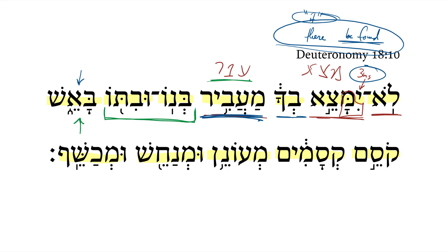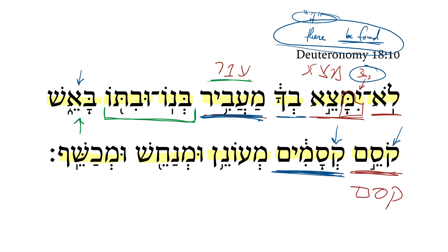And then we get a few others. We get another participle — this is a qal participle of the root qof-samek-mem, and this would be to practice divination. With the cognate noun here, it would be something like one who divines divinations, or we could put that together more idiomatically: one who practices divinations.